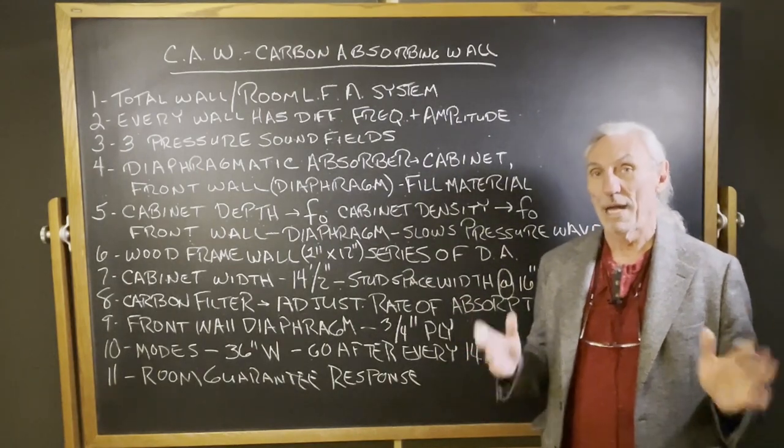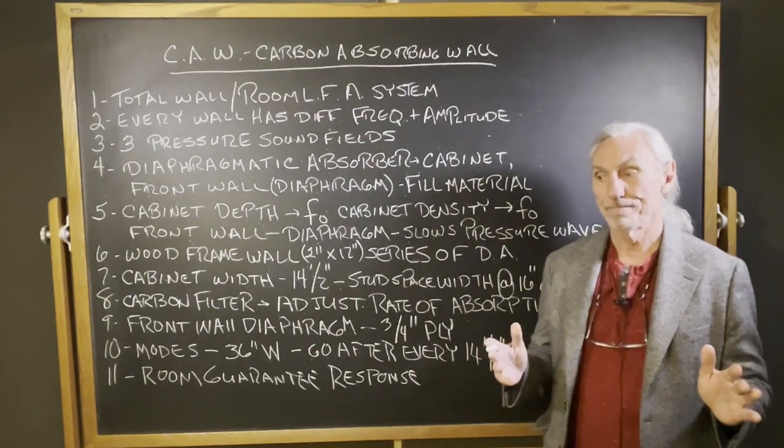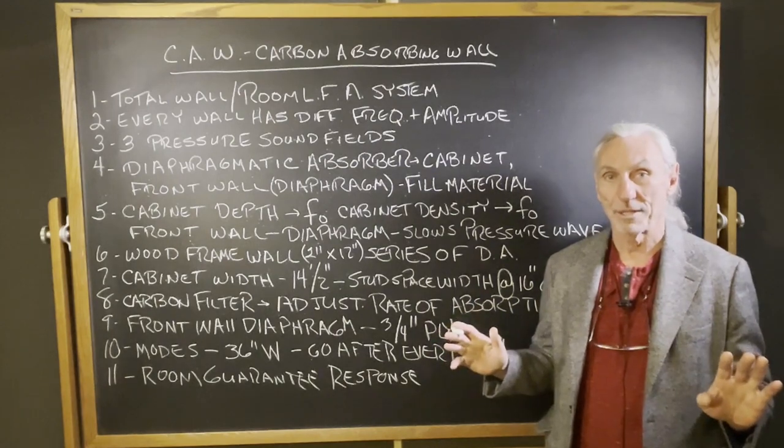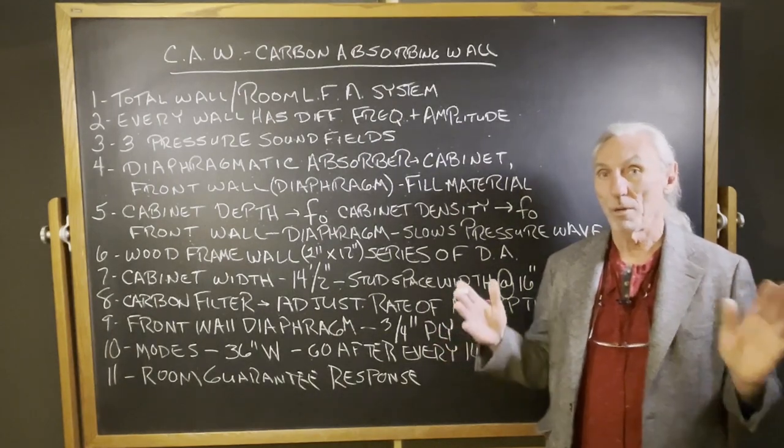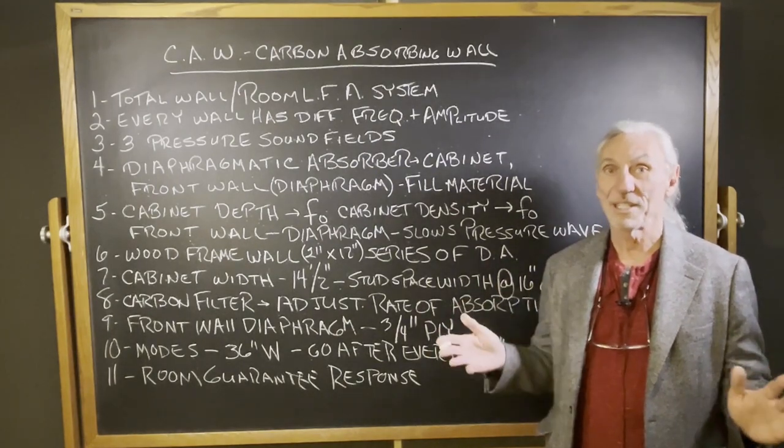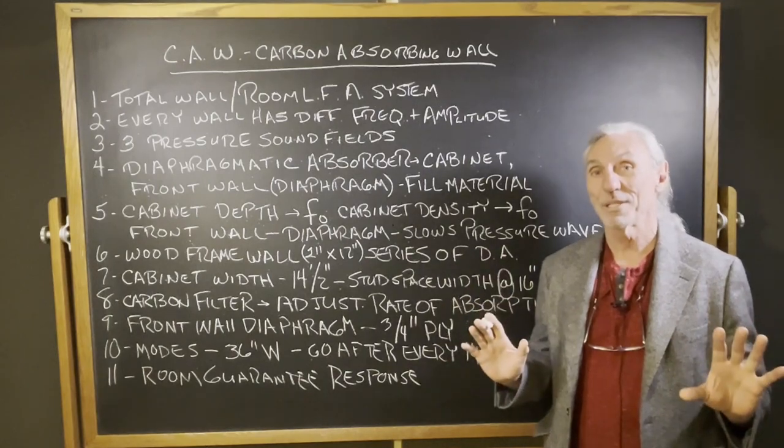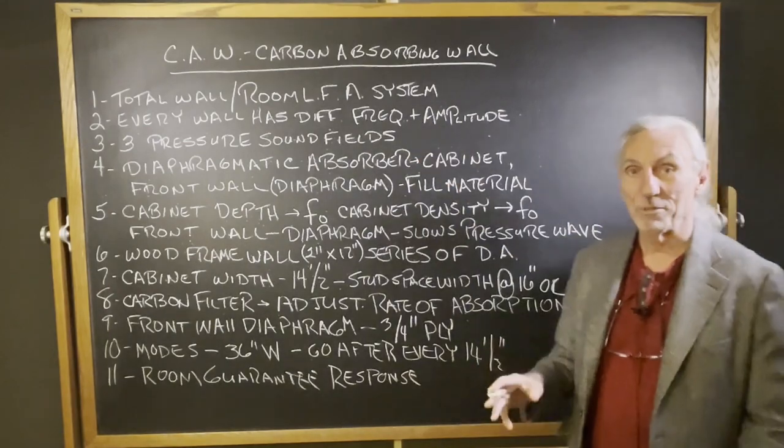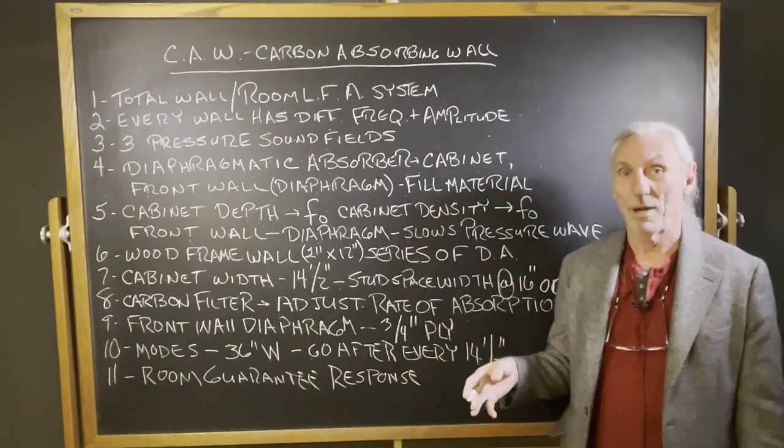Every room has low frequency problems on all the surface areas: front wall, rear wall, both side walls, floor and ceiling. So we have six surface areas, all exhibiting problems, all exhibiting different frequency and amplitude problems.